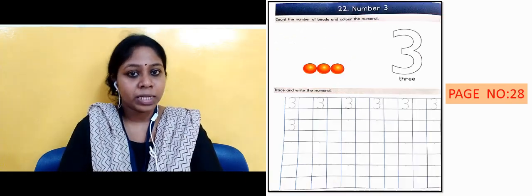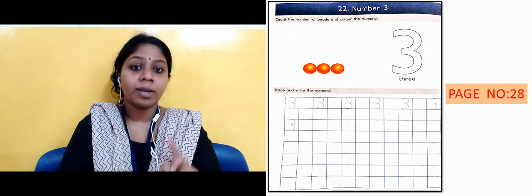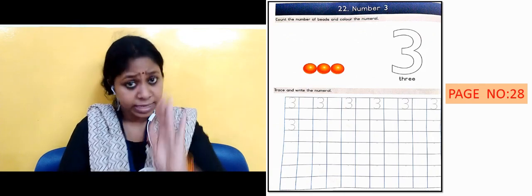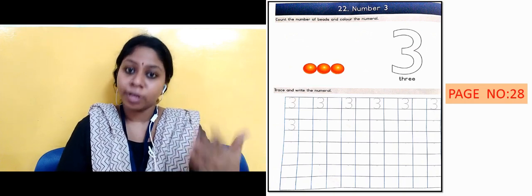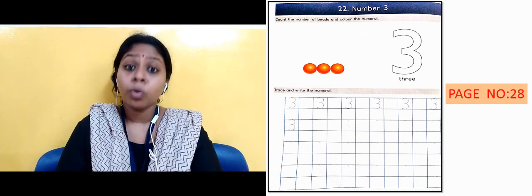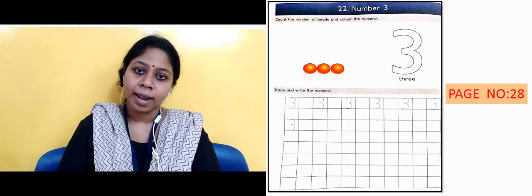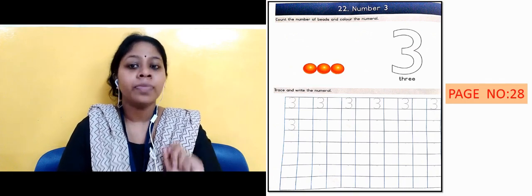The next slide is showing page number 28 and the topic name is number 3. Same for 1, 2. Here also you will count. And then you already have done the coloring and you will now revise how to trace and write the number 3.